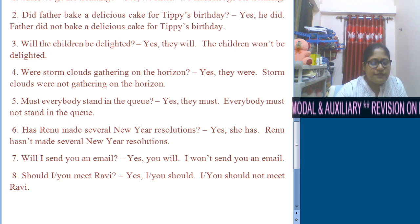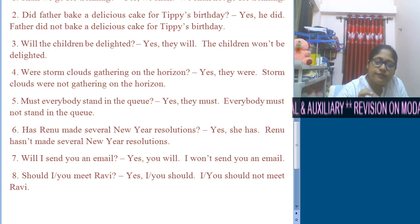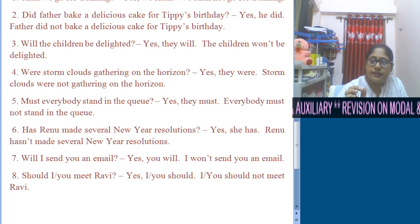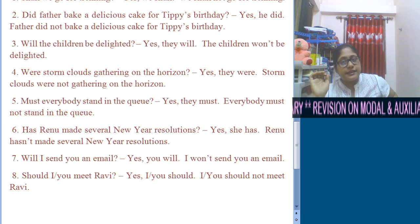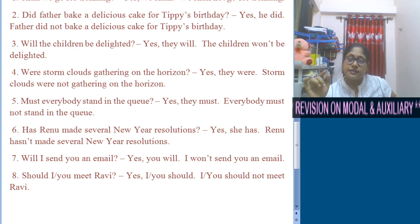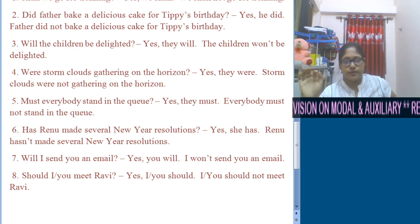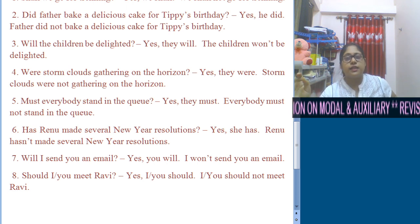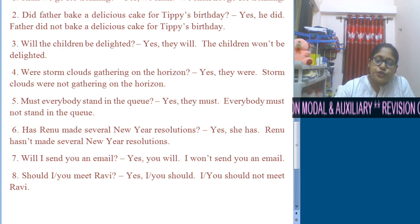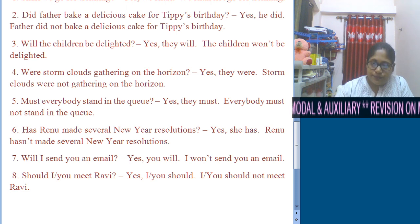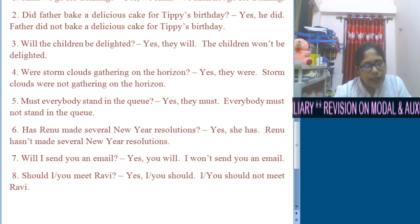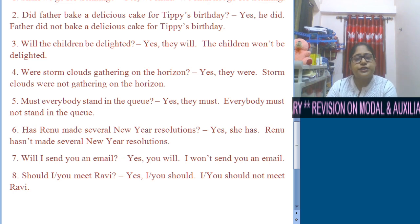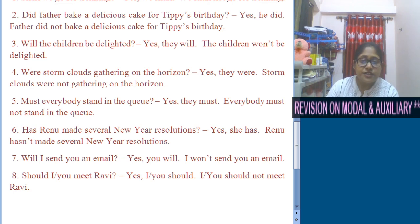Number 7: I will send you an email. Interrogative: Will I send you an email? Short answer: Yes, you will. Negative: I won't send you an email. Number 8: You should meet Ravi. Interrogative: Should you meet Ravi? Short answer: Yes, I should, or yes, you should. Negative: I should not meet Ravi, or you should not meet Ravi.